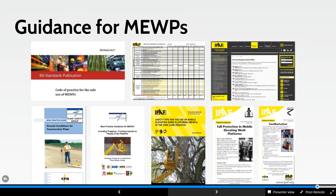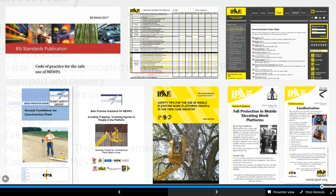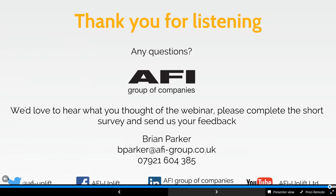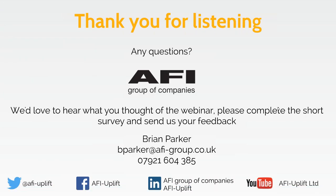In summary, we've covered competence, and looked at table one of BS8460 and hazards associated with MUPs: transport and delivery, positioning, setting up, during use, fall prevention, maintenance, and collecting. All of that is very much at the start of the document in table one, and with a hyperlinked electronic copy you can click directly to the relevant clause. The standard is easier to navigate than many people think. That concludes the webinar — I hope you found it useful and interesting.